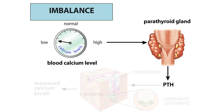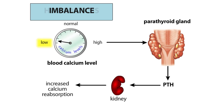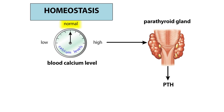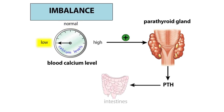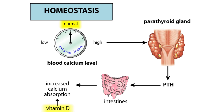PTH also conserves calcium by stimulating the kidneys to resorb it rather than losing it in the urine. Finally, increased secretion of PTH causes the digestive tract to absorb more calcium from food, but this is an indirect effect dependent on vitamin D. In the kidney, PTH stimulates the conversion of vitamin D to an active form, and it is vitamin D that acts on the digestive tract to enhance absorption of dietary calcium.